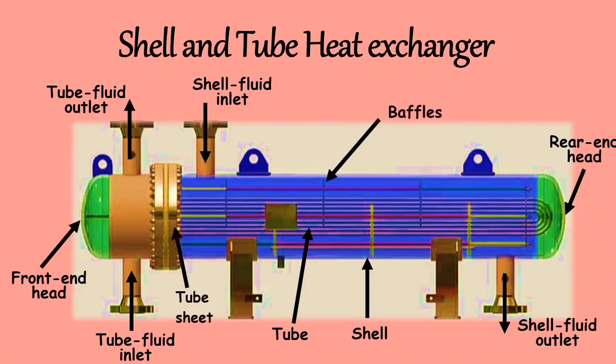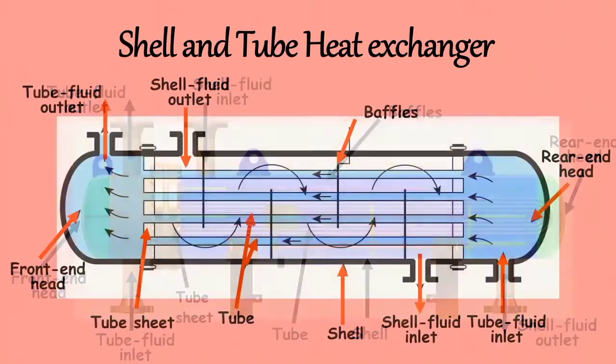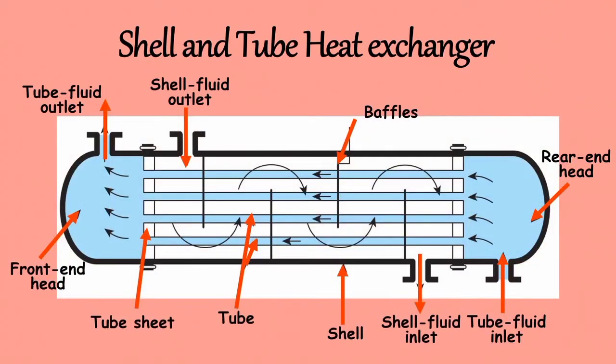Shell and tube heat exchanger consists of a number of parallel tubes placed in a bundle, and the ends of the tubes fixed in the tube sheets. The tube bundle is enclosed in a cylindrical shell through which the second fluid flows. One fluid flows on the inside of the tubes, while the other fluid flows through the space created between the tubes and shell — that is, outside the tubes or through the shell.